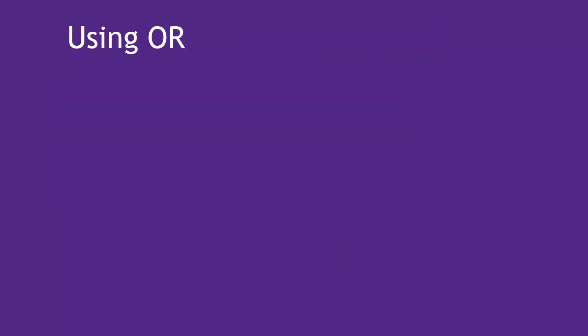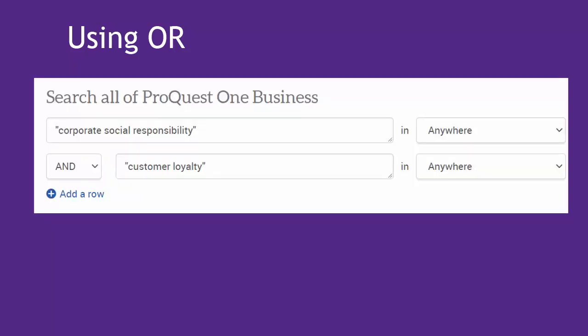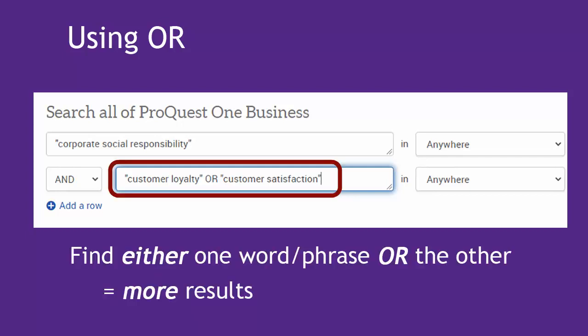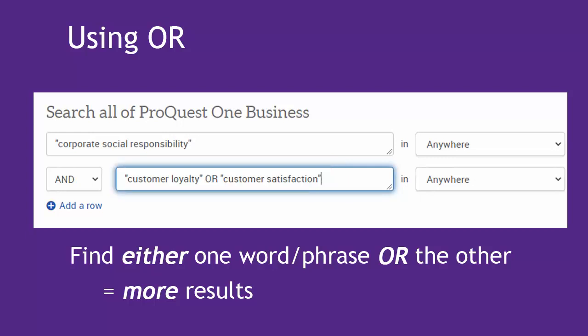You can try OR to add in some alternate search words with very similar meanings. To do that, it's easiest to put that concept in its own search box on the advanced search page, and type in the alternate words or phrases with a capital letter OR between them. This means find either customer loyalty or customer satisfaction. Using OR between words or phrases should always give you more results in your list.